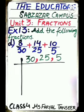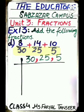Exercise number 13: add the following fractions. Part D: 8/30 plus 14/25 plus 10/5. Here we have 3 different denominators, so we will find the LCM of 30, 25, and 5.